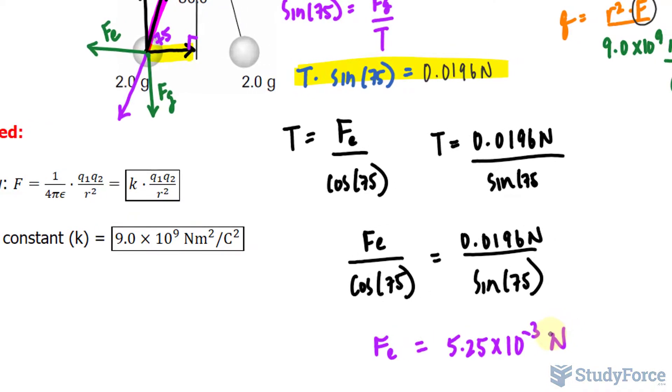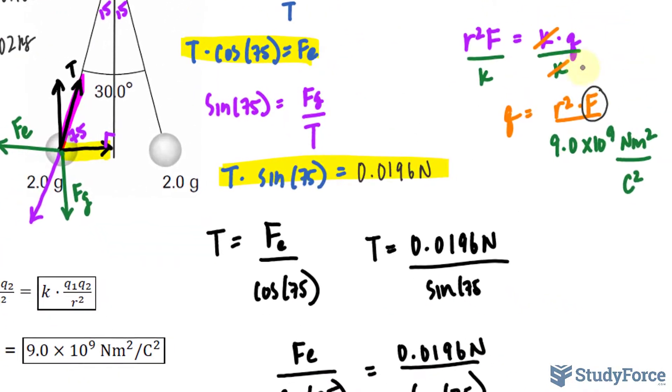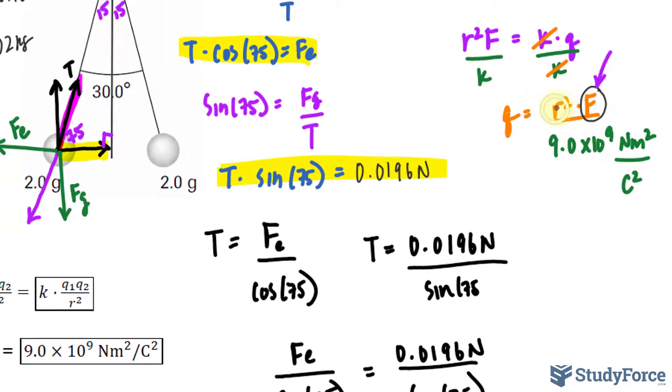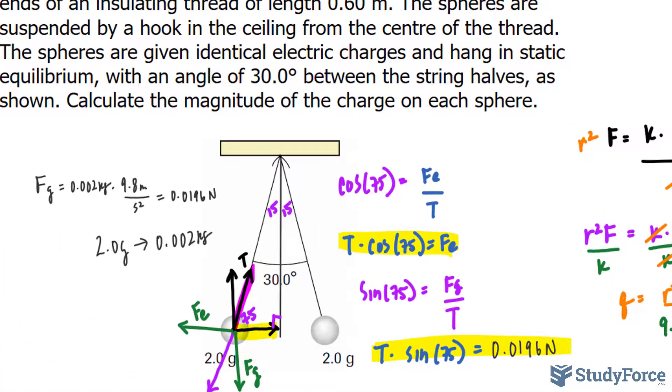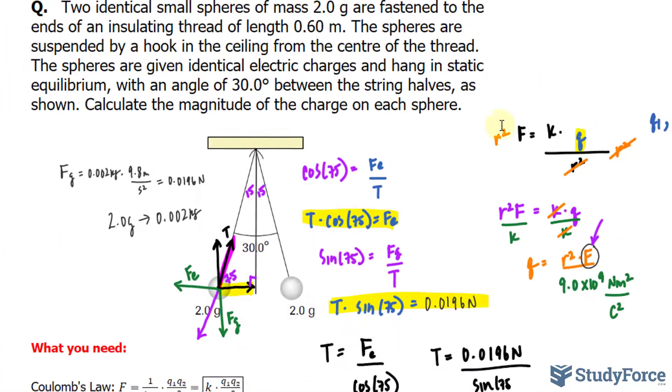So now we have Fe, which will be placed into there, and we still need the distance r, the distance between these two spheres. That shouldn't be hard to find at all. In fact, we are told that the length of the string is 0.60 meters.